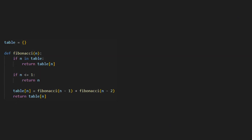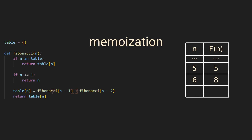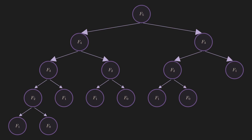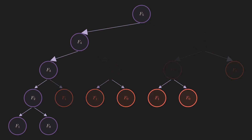So how do we make recursion faster? Easy — store the results in a table as we go. This is called memoization. Every time we encounter a new Fibonacci number, we remember it, so next time we need it, we can look it up in the table and avoid wasting time recalculating it. That means we were able to remove all these nodes from the computation graph.